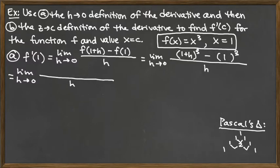So we've got 1 plus 2 giving the 3, and then 2 plus 1 giving the other 3. This line — 1, 3, 3, 1 — is the one you utilize for coefficients whenever you're cubing out a binomial like this.